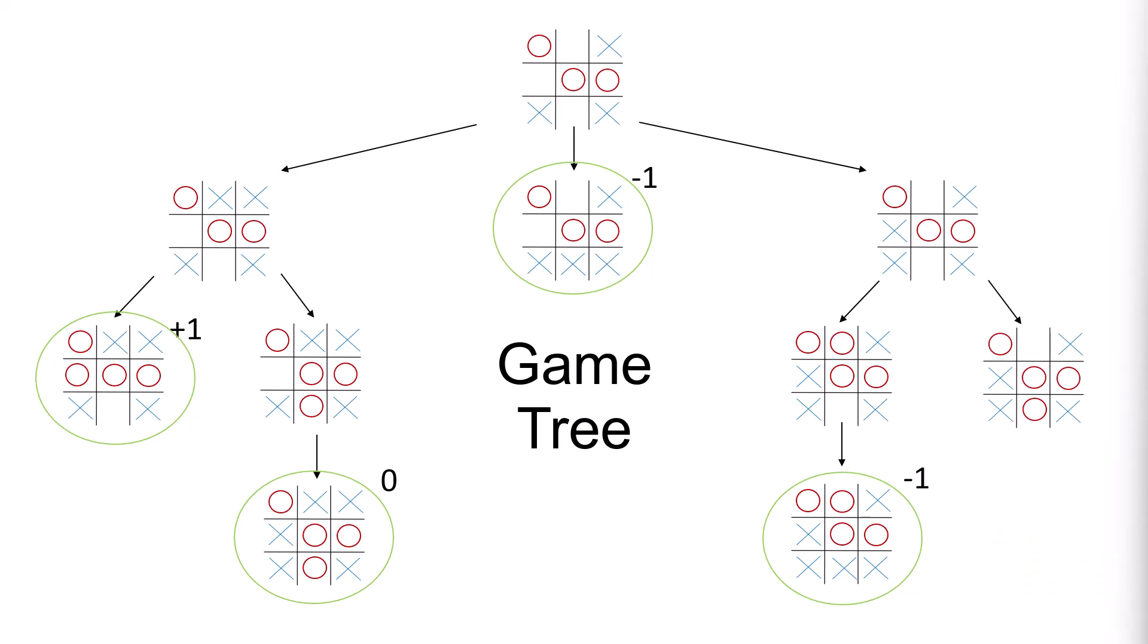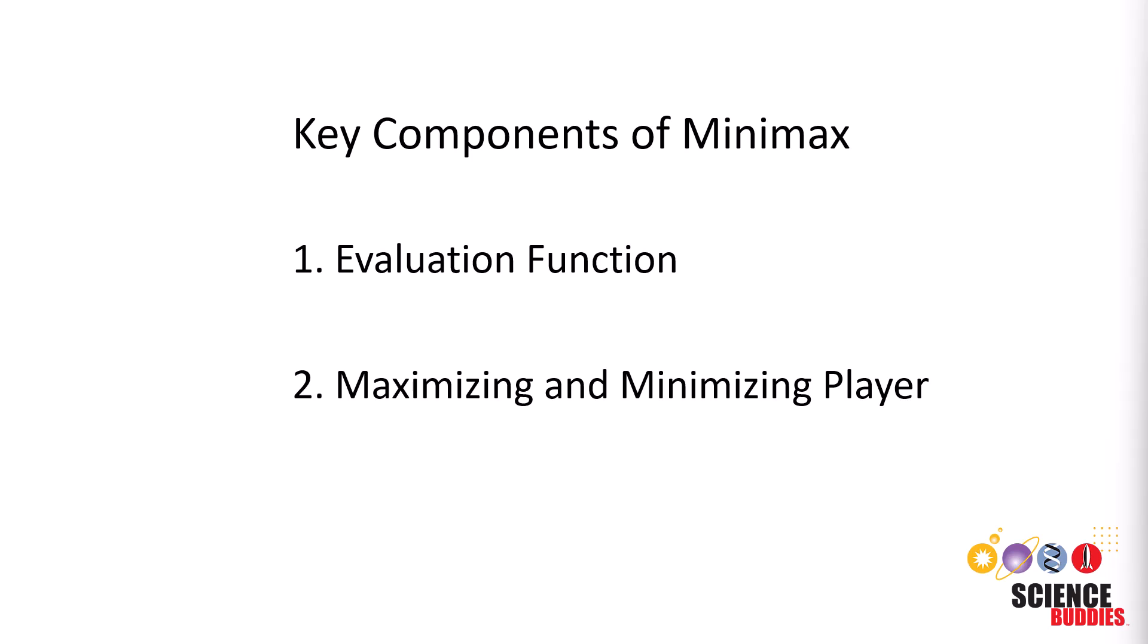Minimax's ultimate goal is to find the optimal move for a player, maximizing their advantage while minimizing the opponent's potential gains. Let's go over the key components of the Minimax algorithm, which are the evaluation function and the maximizing and minimizing player.